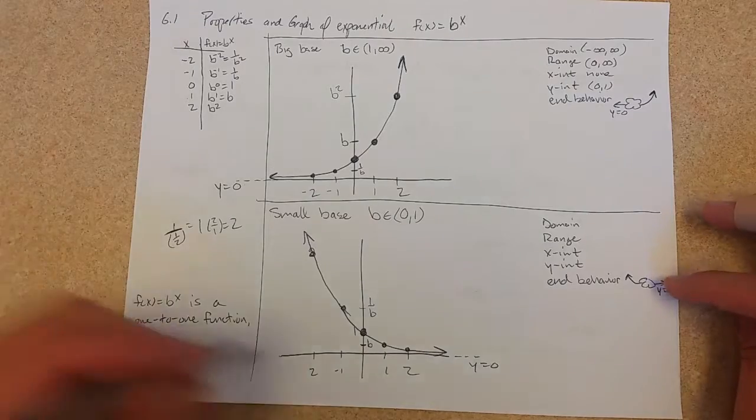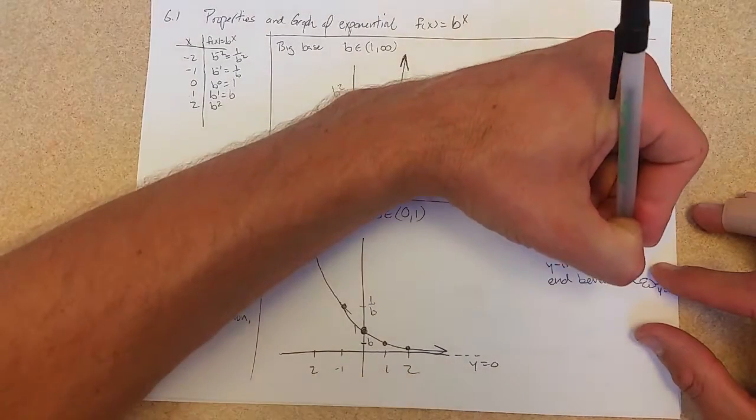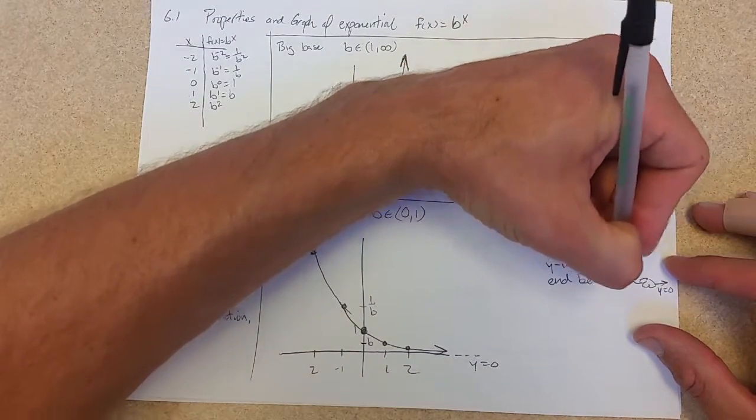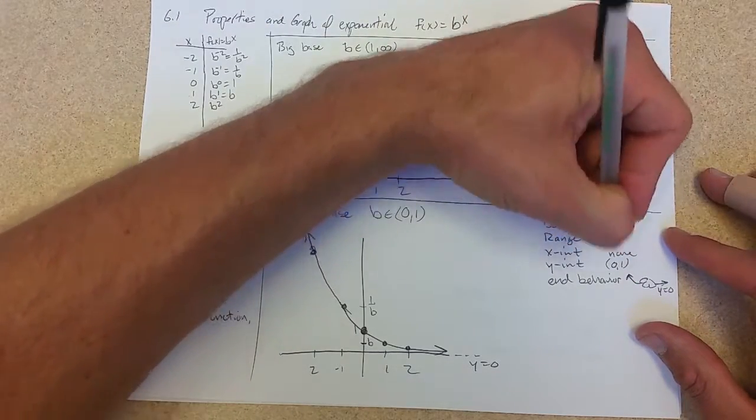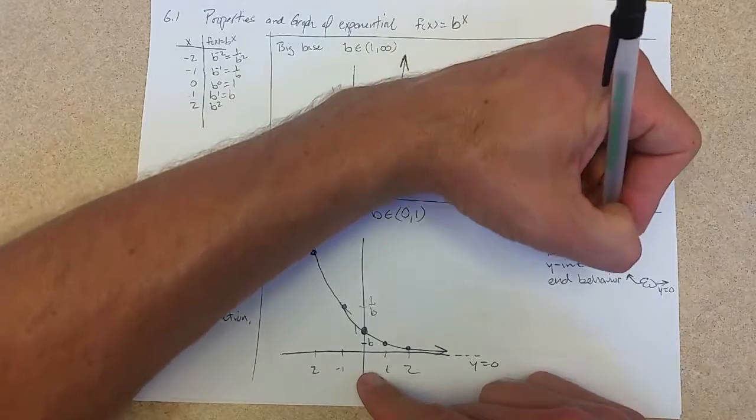y equals 0 on the right, approaching positive infinity on the left. x-intercept, y-intercept, we've got no x-intercept. y-intercept same as before. Domain, full domain, and range, still 0 to infinity.